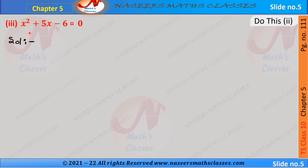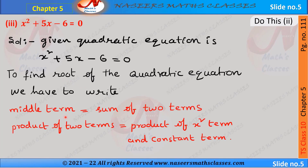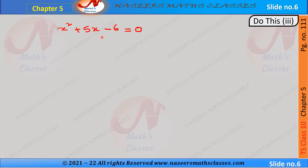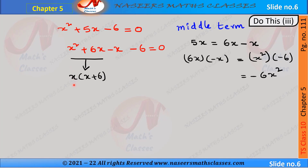The third quadratic equation is x² + 5x - 6 = 0. To find the roots, we write the middle term as the sum of two terms whose product equals the product of the x² term and the constant term. The middle term 5x is written as 6x - x, and multiplying these gives -6x². The equation becomes x² + 6x - x - 6 = 0. In the first two terms, x is common, giving x(x + 6).